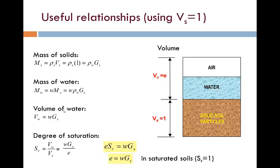In total, we've defined 10 new terms, either densities, mass ratios, or volume ratios. It would be useful to be able to relate them to each other through a new set of formulas. To do this, we simplify the phase diagram by letting the volume of solids VS equal to 1, as shown in red.